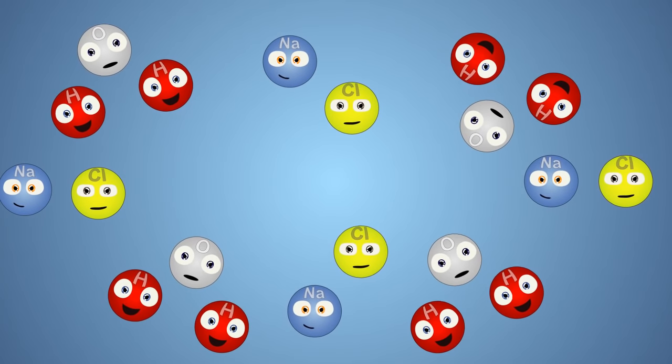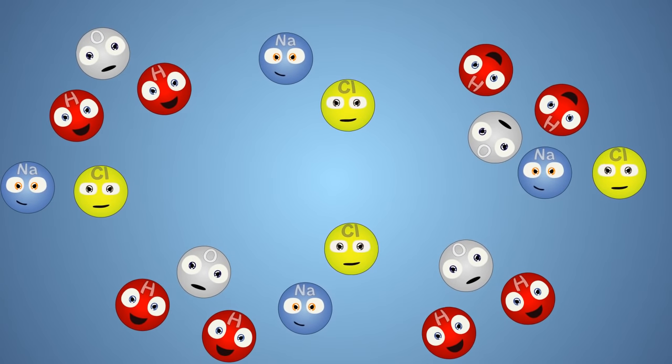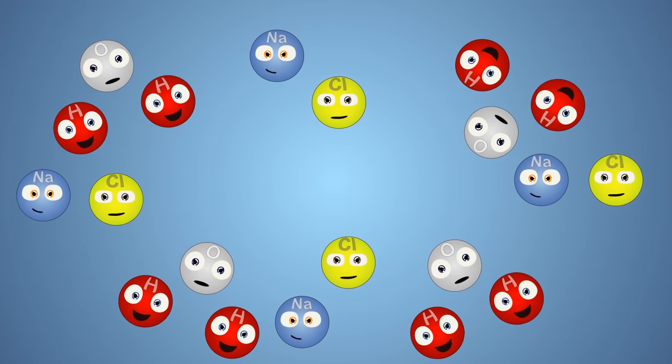When we add energy in the form of electricity to our now conductive solution, it causes the bonds in the water molecules to break. All of these ions are now floating in our solution, which leaves them free to create new bonds.